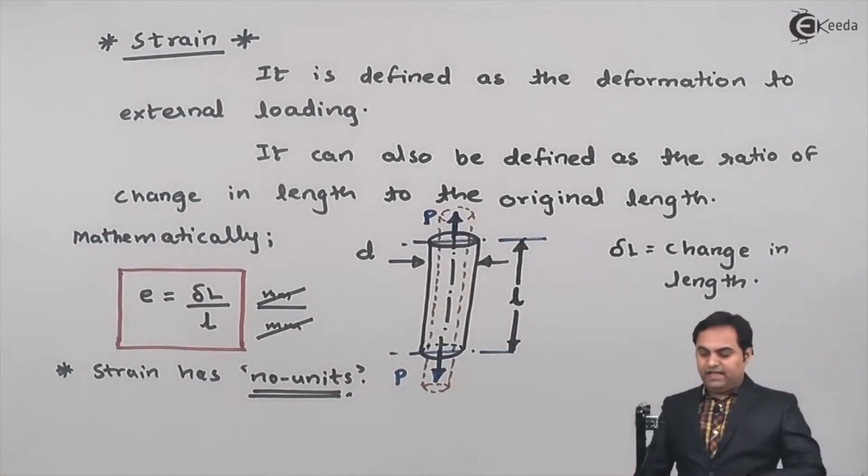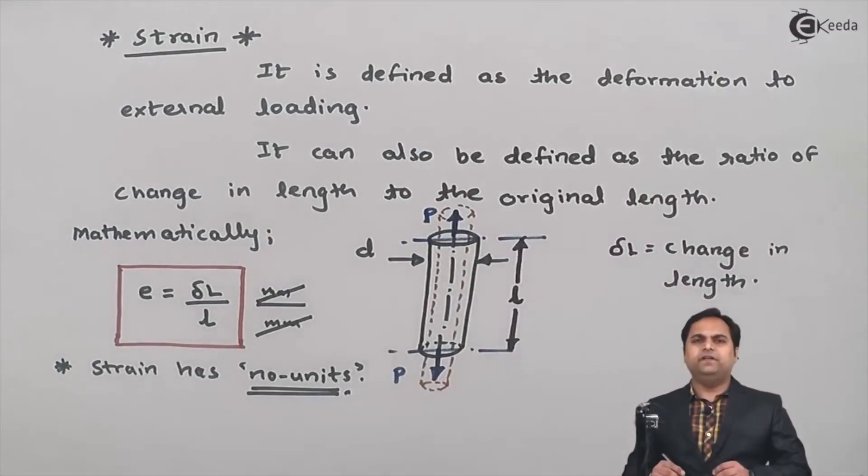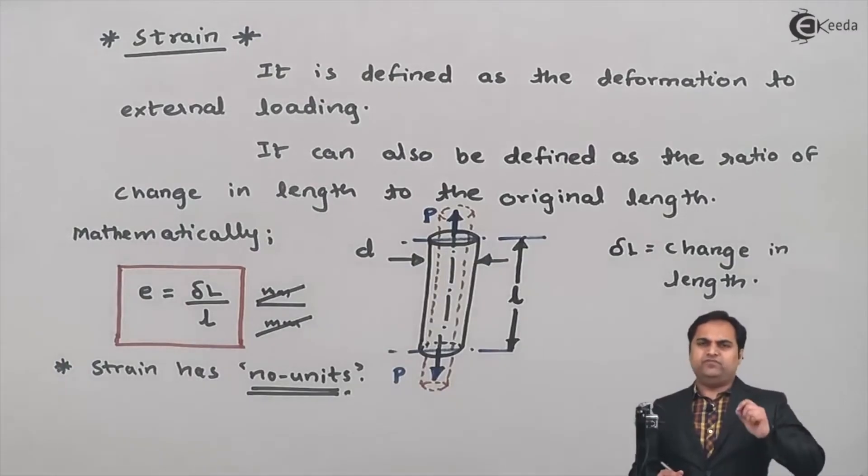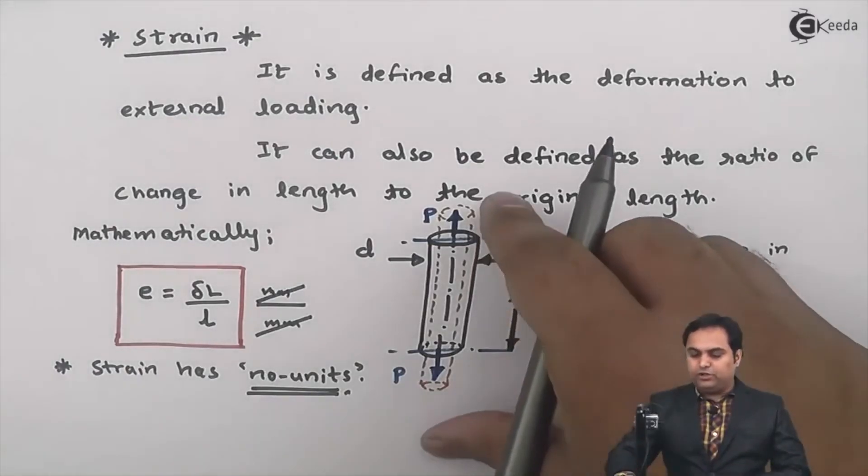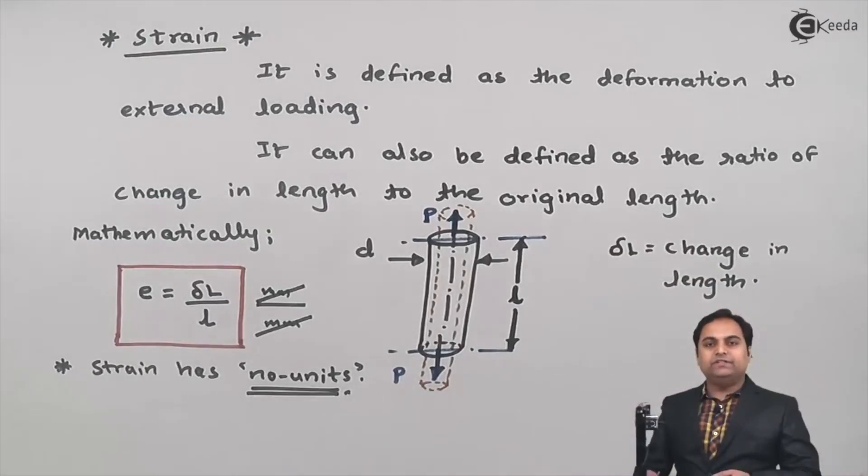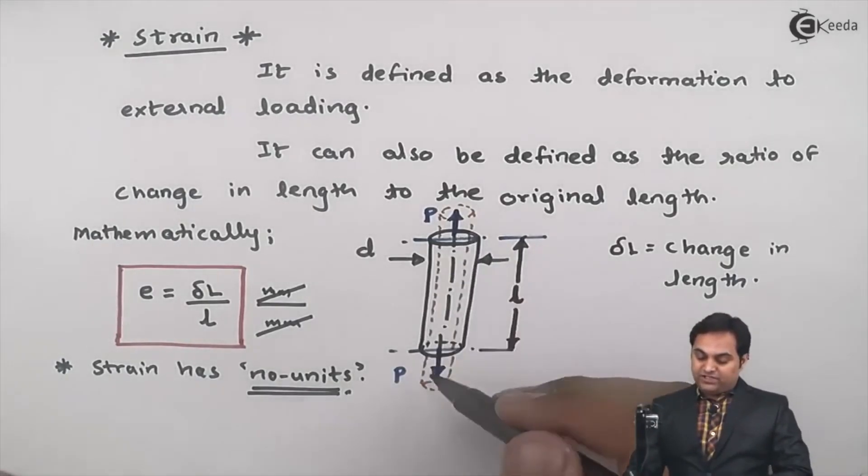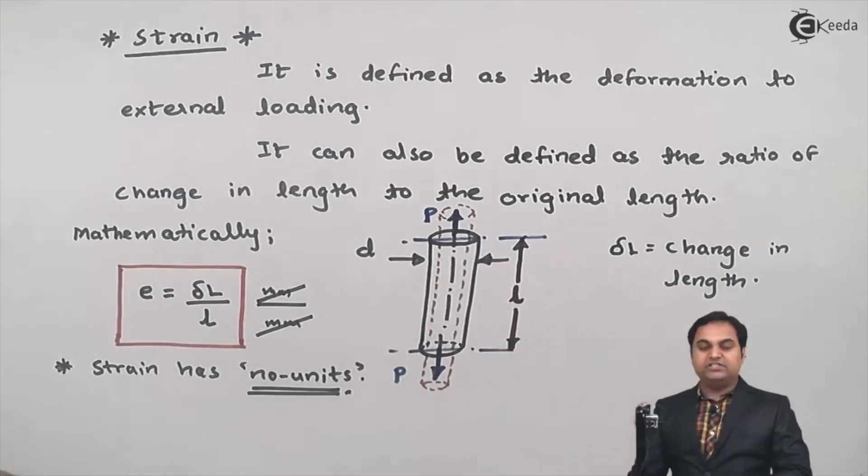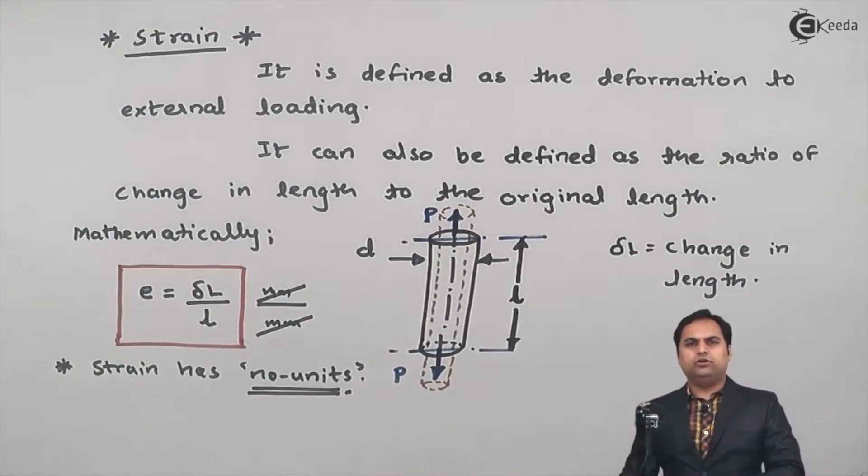As I was explaining, strain is the physical deformation. The deformation which we can see in any member would be called strain. Here in this case I am pulling the rod, so the length will go on increasing and diameter will go on decreasing. Now suppose if I am compressing the rod in case of compression, the direction of the load would be changed and then length will go on decreasing and diameter will go on increasing. That is also called strain.